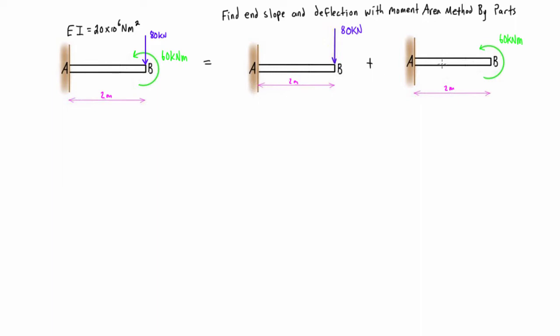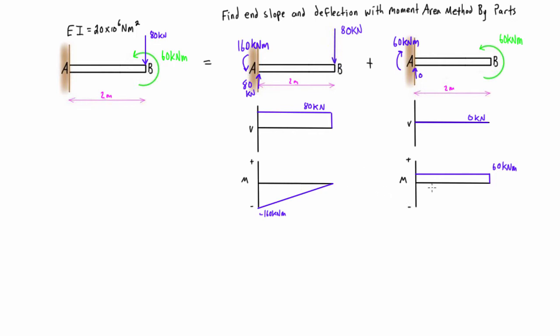What we do with this is we draw each one's shear force diagram and then their bending moment diagrams. Because the sum of these two systems basically represents what's going on in this actual system, then the sum of their bending moment diagrams represents the actual bending moment diagram and we can just stack them like this.